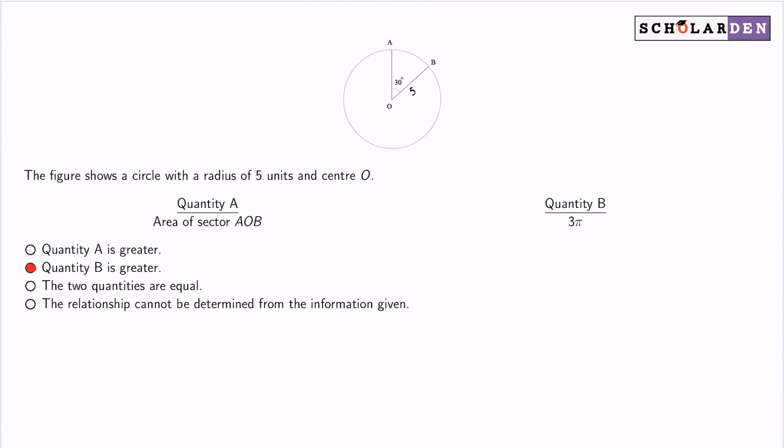So quantity B is simply 3π, and so there's nothing for us to do there. Quantity A is the area of sector AOB. So that's a little more complicated, but we can get there just the same.